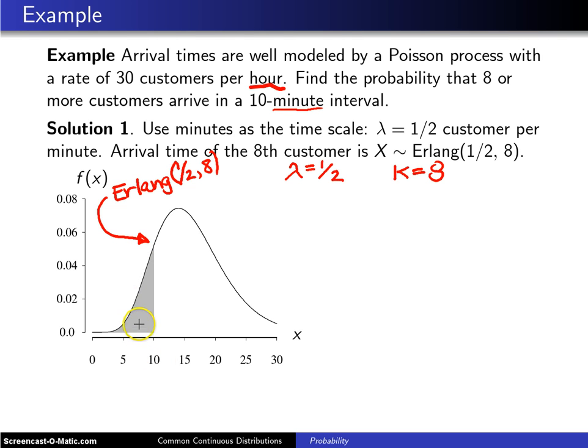That's the same as saying the eighth customer arrives sometime before time 10. That is this shaded area. As usual, we let lambda times t be the rate: one-half customer per minute times the number of minutes, and that will be 10.